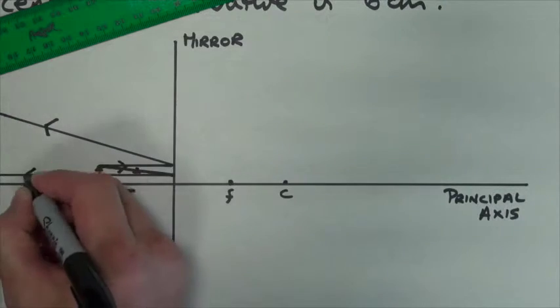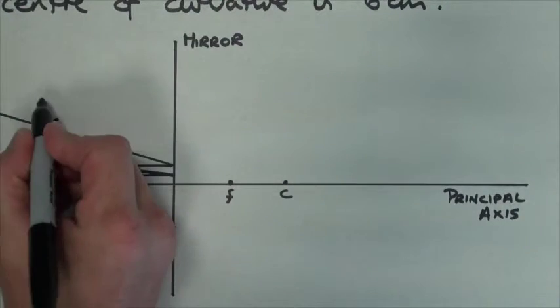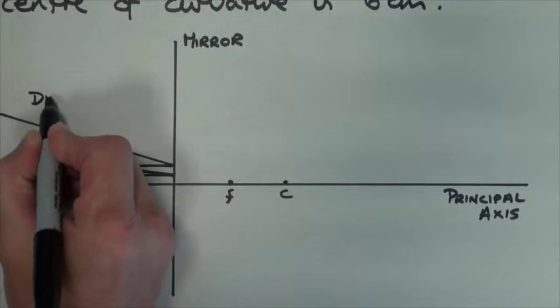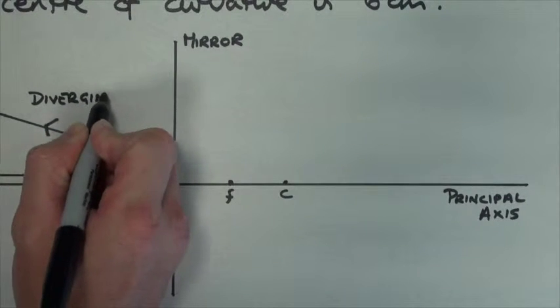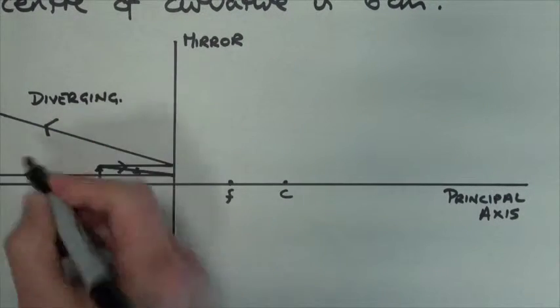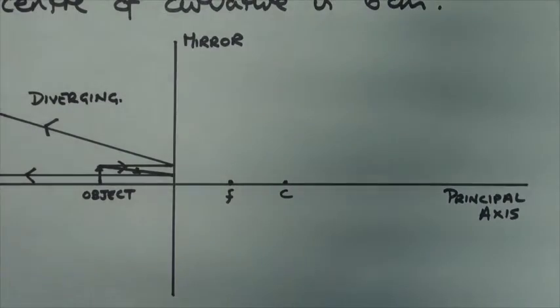Now again, you will notice they will not converge on the real side of the mirror. So basically they're diverging away. So they converge on the other side of the mirror, the right-hand side of the mirror.